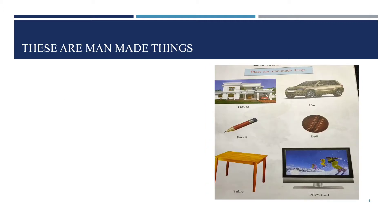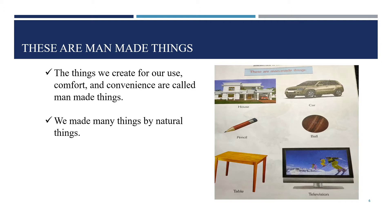Now, man-made things. See — these are the man-made things: house, car, pencil, bowl, table, television. We have so many man-made things on our earth. The things we create for our comfort and convenience are called man-made things. We made many things from natural things. House, car, pencil, ball, table, television — all are created by man, so we call them man-made things.